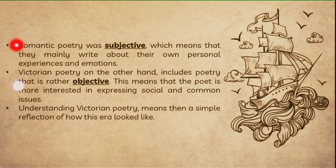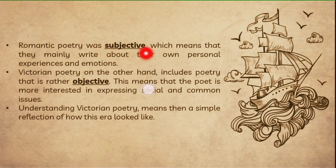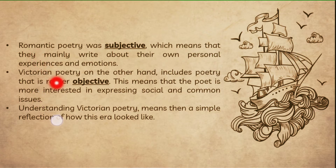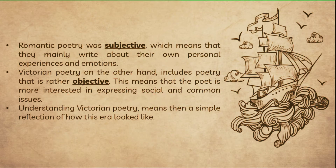The age we studied before was the Romantic Age, or Romantic poetry, and we can consider that Romantic poetry is subjective in its nature — meaning they write about their own personal experiences. Most Romantic poems were personal, discussing personal problems and experiences. Victorian poetry, however, includes objectivity; they talk about social issues and social problems.